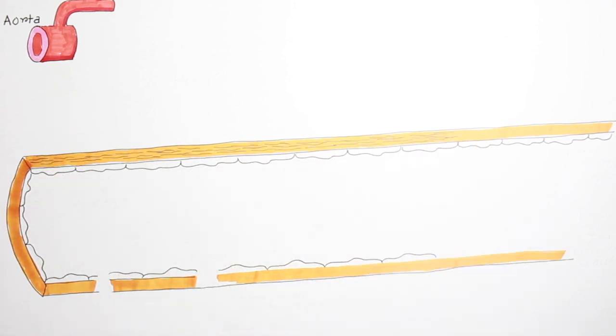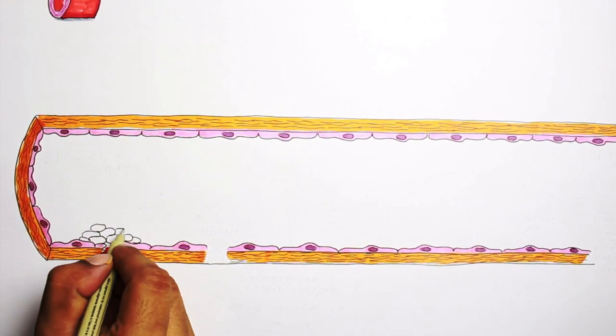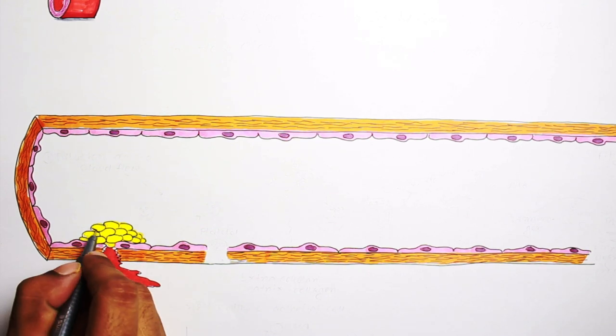Suppose here is a breach in continuity of the vessel wall. Within a second, a semi-solid mass will be formed from the constituents of blood and will stick over there so that the blood will remain in liquid form and keep on circulating in the CVS system.